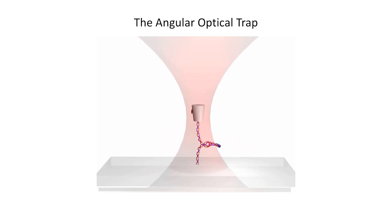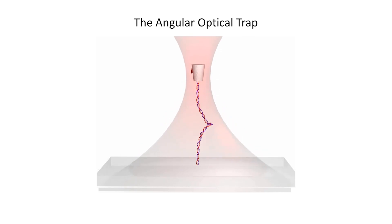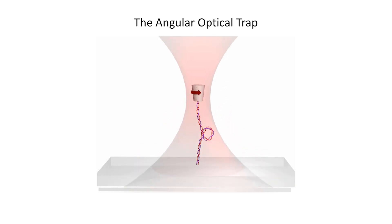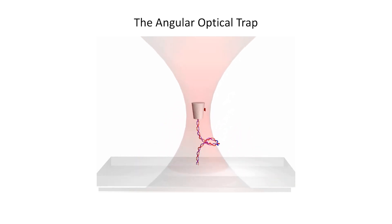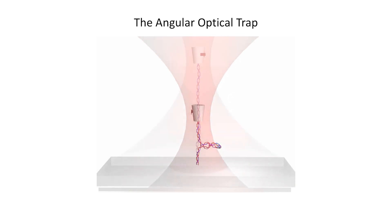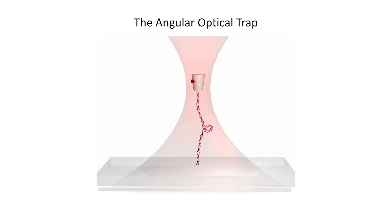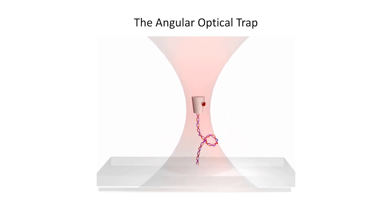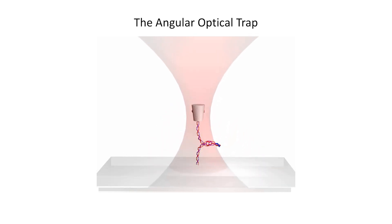We developed the angular optical trap to answer questions just like this. We found that it is a lot easier to twist a single chromatin fiber than to twist a double chromatin fiber, so the extra twist will primarily go to the front, thus minimizing the intertwining of the two daughter DNA molecules.